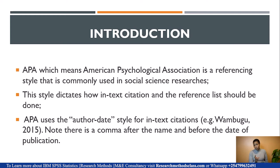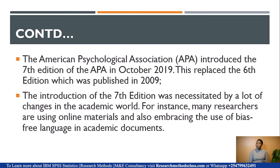APA is unique from other referencing styles because it uses the author-date style for in-text citations. Author-date means the author's name and their year of publication, with a comma after the name and after the date. APA introduced the 7th edition in October 2019, and by 2020 many institutions had started using it. The 7th edition replaced the 6th edition, which was published in 2009.